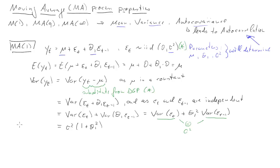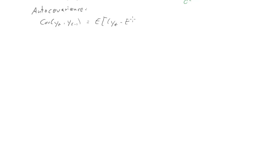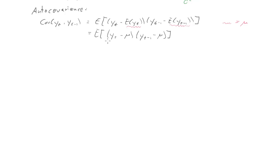The parameters sigma squared and theta_1 describe this variance. Next we look at the autocovariances. The first one is the covariance between Y_t and Y_{t-1}. By definition, the covariance is the expected value of (Y_t minus its expected value) times (Y_{t-1} minus its expected value). We recognize that the expected values are just equal to mu, and we substitute that in. We then substitute these terms from our data generating process.